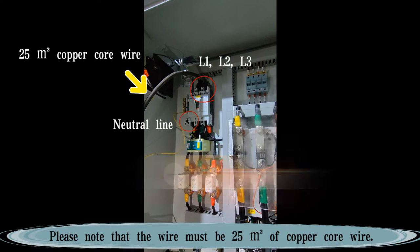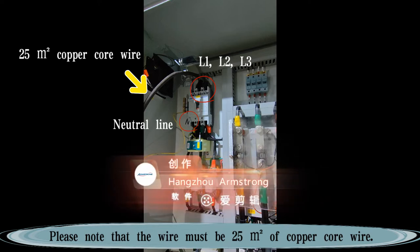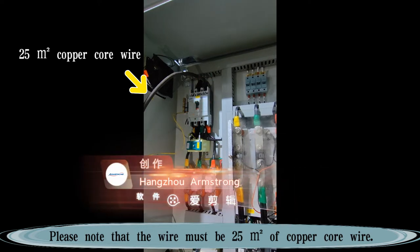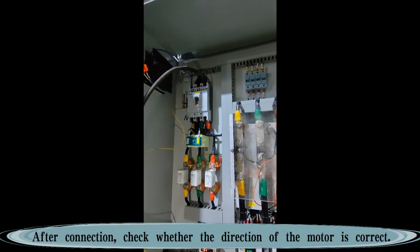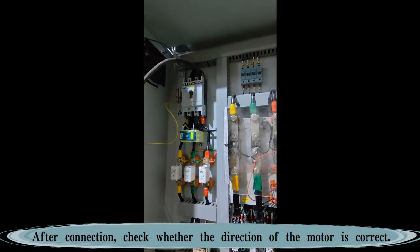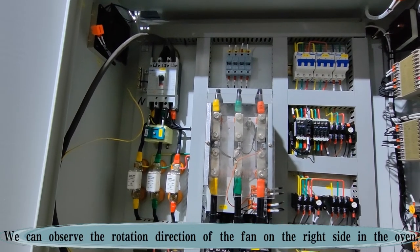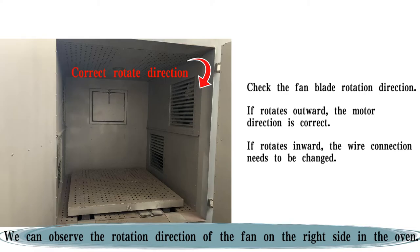Please note that the wire must be 25 square millimeters of copper core wire. After connection, check whether the direction of the motor is correct. We can observe the rotation direction of the fan on the right side in the oven.